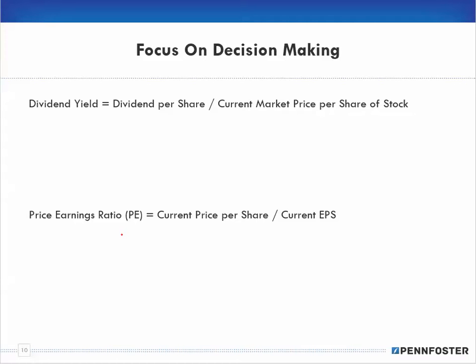If a PE ratio seems low compared to other companies in the same sector, investors will take a closer look. Remember: keeping earnings per share constant, the higher the price, the higher the PE ratio — and the lower the price, the lower the PE ratio. Investors want to buy a stock that has more room to go up.